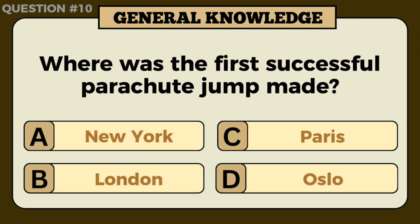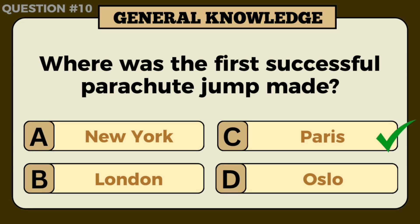Where was the first successful parachute jump made? Answer: C — Paris.